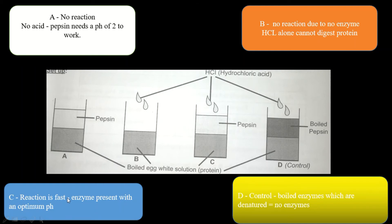In test tube C, the reaction is actually fast because we have pepsin present, and it is subjected to an optimum pH of 2. In test tube C we have hydrochloric acid plus pepsin plus protein. The pepsin is in an acidic environment because of the hydrochloric acid, so the reaction is fast because these two work together. For an enzyme to work, it should be at an optimum pH and at an optimum temperature.